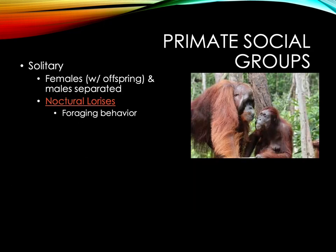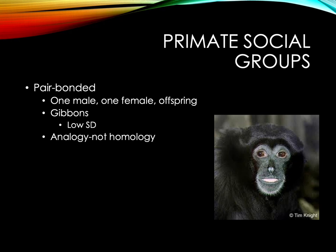There are five basic types of sociality. The first is solitary, where females — usually with their offspring — are separated from males. Nocturnal lorises engage in solitary behavior; being solitary is likely adaptive because foraging at nighttime with more individuals would increase predation risk. The second type is pair bonding — one male and one female with offspring. Gibbons, for example, are pair bonded and have low sexual dimorphism, meaning little difference between males and females in terms of secondary sexual characteristics. This is common in pair-bonded species because they have less mate competition.